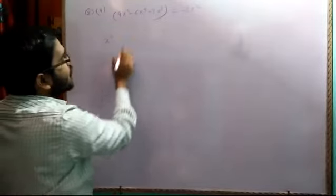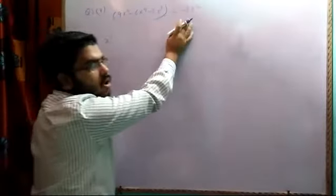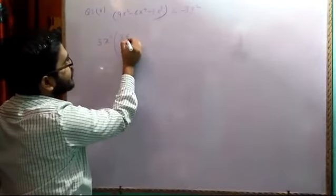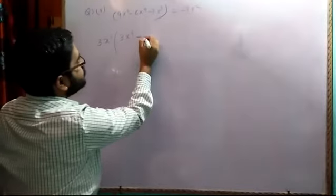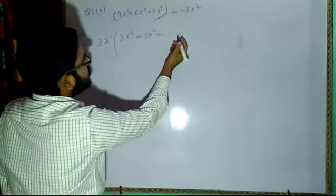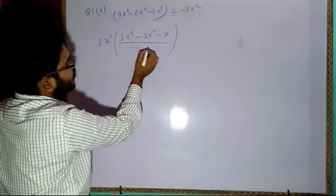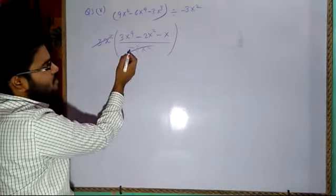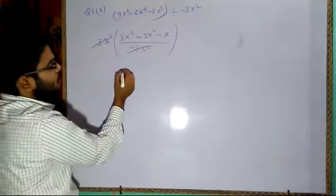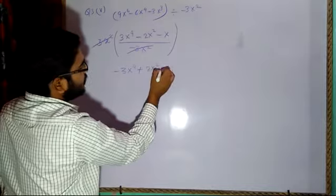Taking out 3x² common from the numerator leaves 3x⁴ minus 2x² minus 1, all times 3x², divided by minus 3x². Now 3x² and 3x² cancel, but there is a minus sign in the denominator. The minus goes to the top, so the answer becomes minus 3x⁴, then minus into minus gives plus 2x², and minus into minus gives plus x.